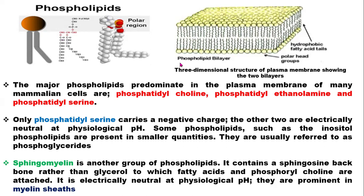Looking at the phospholipid bilayer, the polar heads aggregate outside and the hydrophobic portion goes inside. At the other end, the polar heads assemble and aggregate the non-polar or hydrophobic portion inside. You have hydrophobic fatty acid tails and hydrophilic polar head groups on the outside and inside. This is the three-dimensional structure of the plasma membrane showing the two bilayers. The major phospholipids predominating in the plasma membrane of many mammalian cells are phosphatidylcholine, phosphatidylethanolamine, and phosphatidylserine.